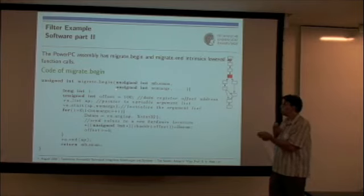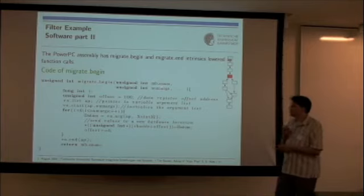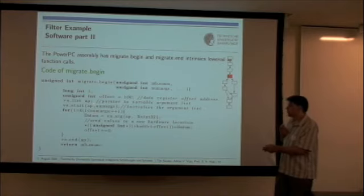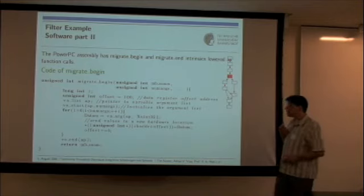Here is an example of the migrate begin instruction. Here we have the information at which point we are so we can set up our hardware in the right way. Then we look for the number of arguments, push the arguments over to the hardware side, and start the hardware backend.